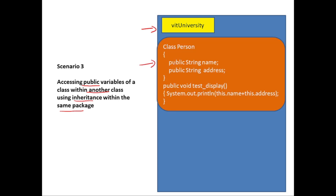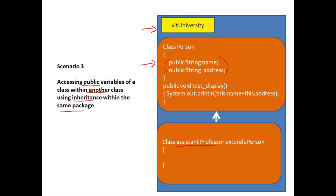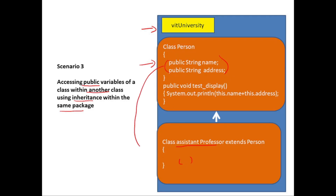Now let's go to scenario number three: accessing variables having the access modifier as public within another class using inheritance, where both classes are in the same package. We have the VIT University package and the class Person with two public data members. We'll have another class called AssistantProfessor which will extend Person. There is an inheritance relationship between these two classes. The question is: can we access these two public data members within methods of the AssistantProfessor class, which is inheriting Person, with both classes inside the same package? The answer is yes.